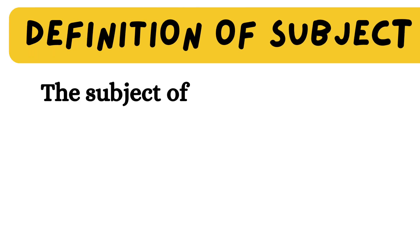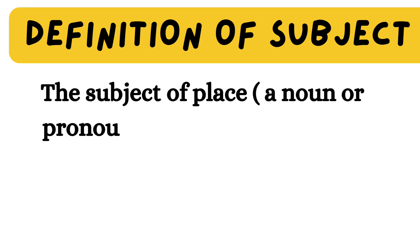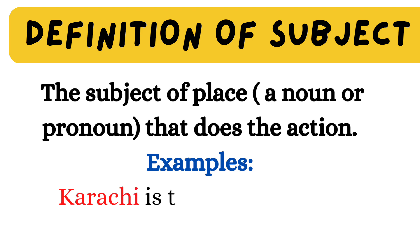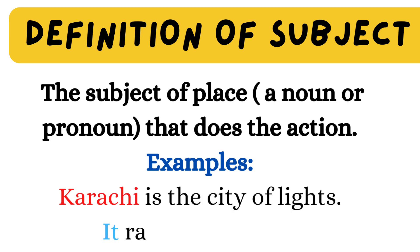Now, the subject of place may be a noun or pronoun that does the action. Look at the example: Karachi is the city of lights. Here, Karachi is indicating the subject of place. It rains in Karachi — here, it is the subject pronoun.